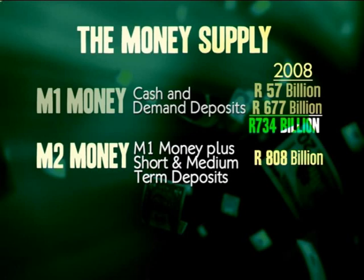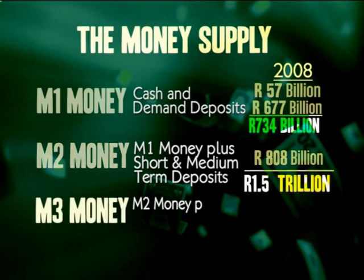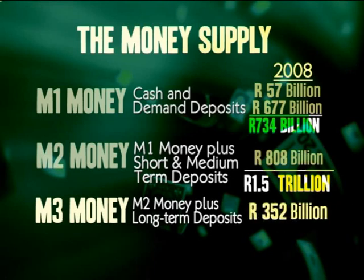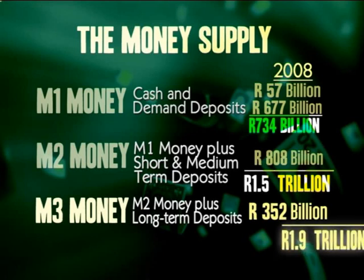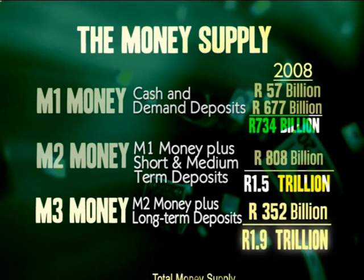Adding short and medium term deposits to M1, we had M2 money of over 1.5 trillion rand. Finally, to work out M3 money, which is all the money in the economy, we have to add long-term deposits to M2 money. Long-term deposits stood at over 352 billion rand in 2008, so the total M3 money supply in the economy stood at almost 1.9 trillion rand.